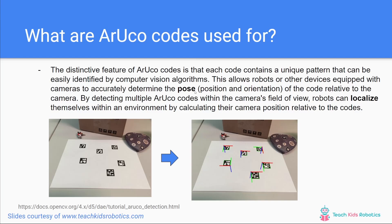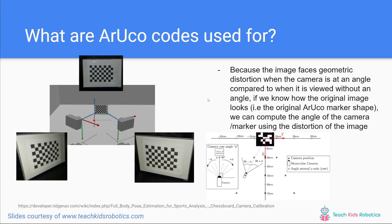By detecting multiple ArUco codes within the camera's field of view, the robot can localize itself within the environment by calculating the camera position relative to the codes. This act of localization means the robot knows where it actually is in space relative to the markers it saw. Below you can see some ArUco codes printed out on a table, and with the red, green, and blue lines we can see the relative axes by which the orientation is adjusted. By looking at the degree differences in orientation of these codes, we can build an understanding of the angle at which the camera is looking at them, which tells us where the robot is in space.